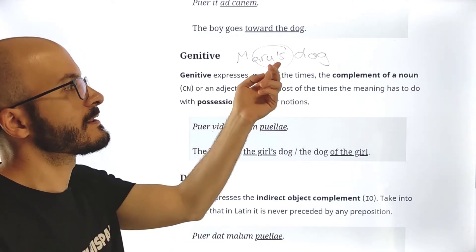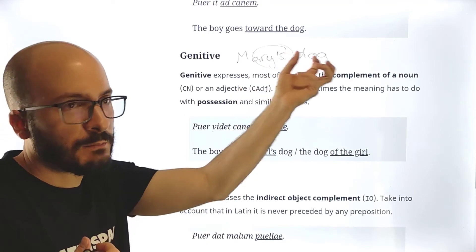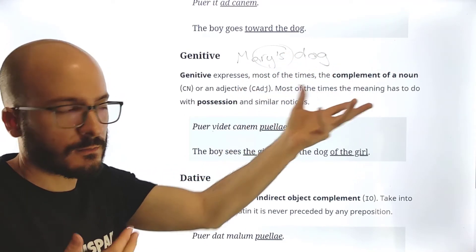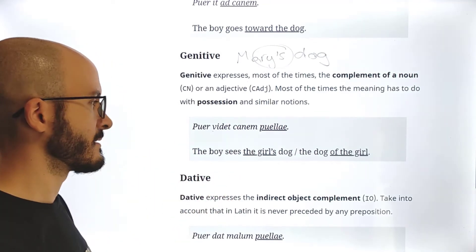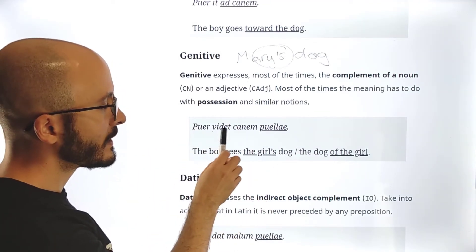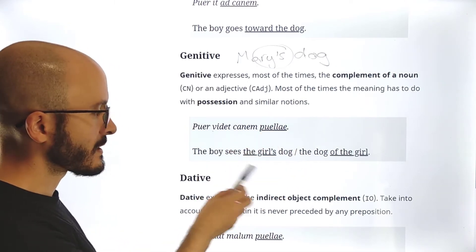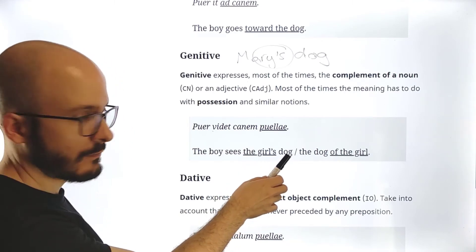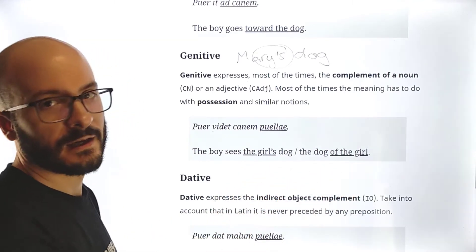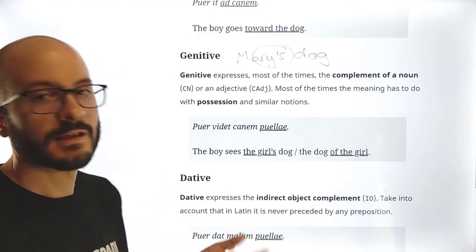It doesn't necessarily have to be possession. So for example, imagine that it's Mary's boyfriend. So of course, Mary doesn't possess her boyfriend, but you know, relationship, possession, all of this. So for example, puer videt canem puellae. So here we have a genitive, and we translate this, the boy sees the girl's dog. Or we could also say, the dog of the girl. This depends on the situation, on the context, etc.